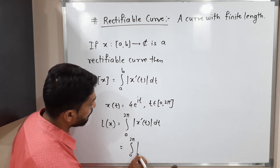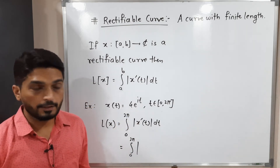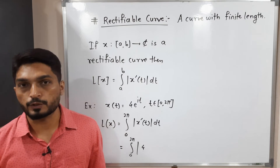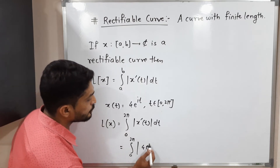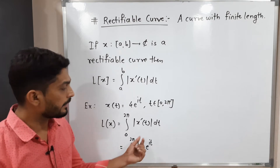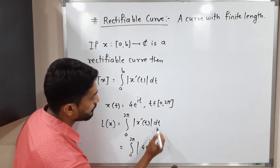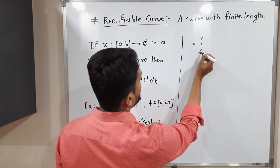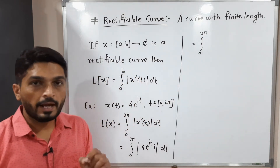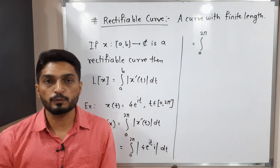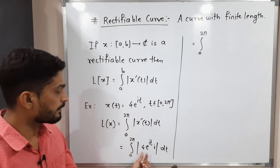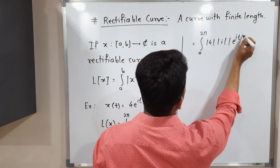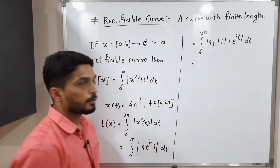This equals ∫ from 0 to 2π of |x'(t)| dt. We need to find the derivative. The 4 is a constant. The derivative of e^(it) is e^(it) multiplied by the derivative of it, which gives i. So x'(t) = 4ie^(it). When we have a product of complex functions, we can take separate mods: |4| · |i| · |e^(it)|.